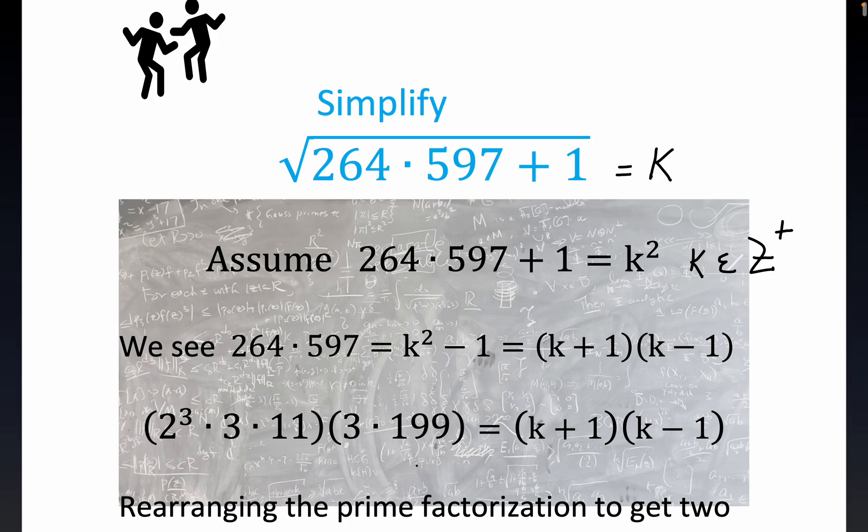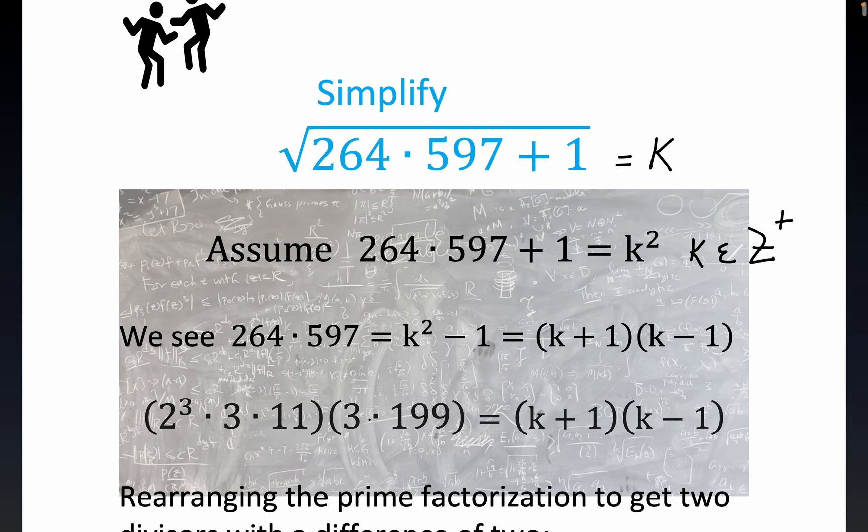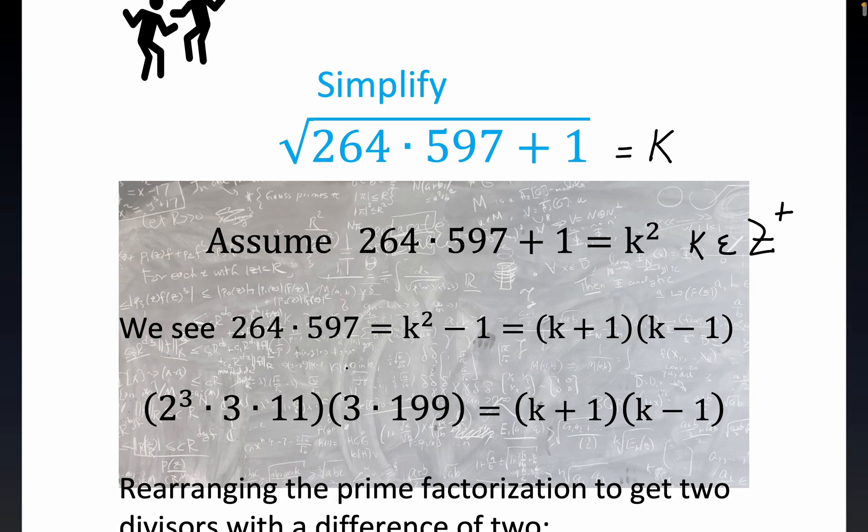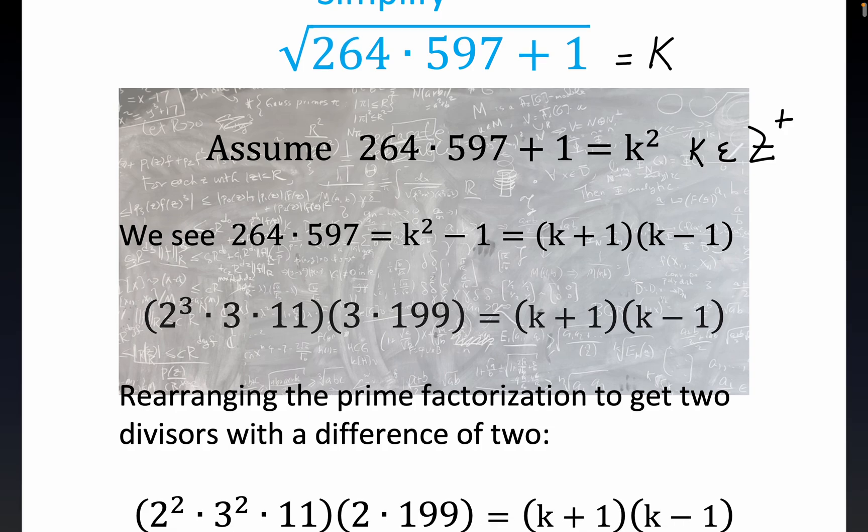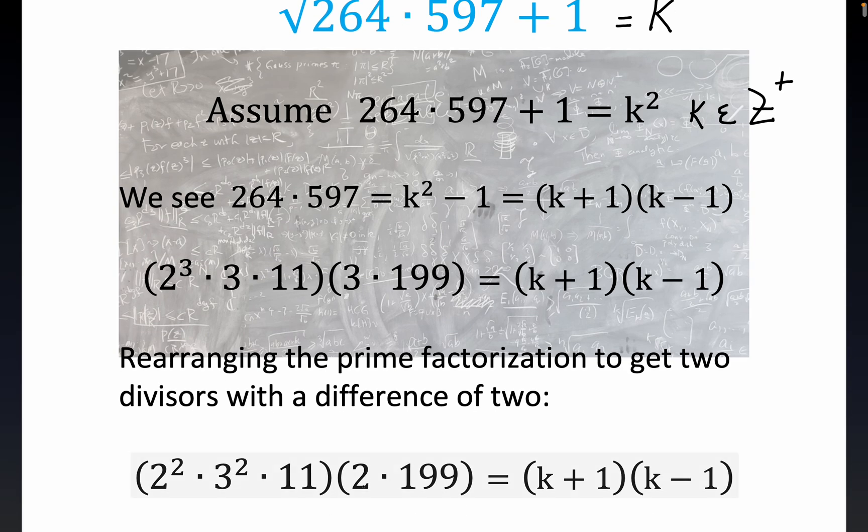And what we need to do at this point, you see, if the difference of these two divisors was 2, we would be done, but it's not. You see, the difference of these two divisors is much more than 2. So we're going to seek a rearrangement of this prime factorization. Now, to get this number smaller, the only really reasonable try is to switch it to a 2.